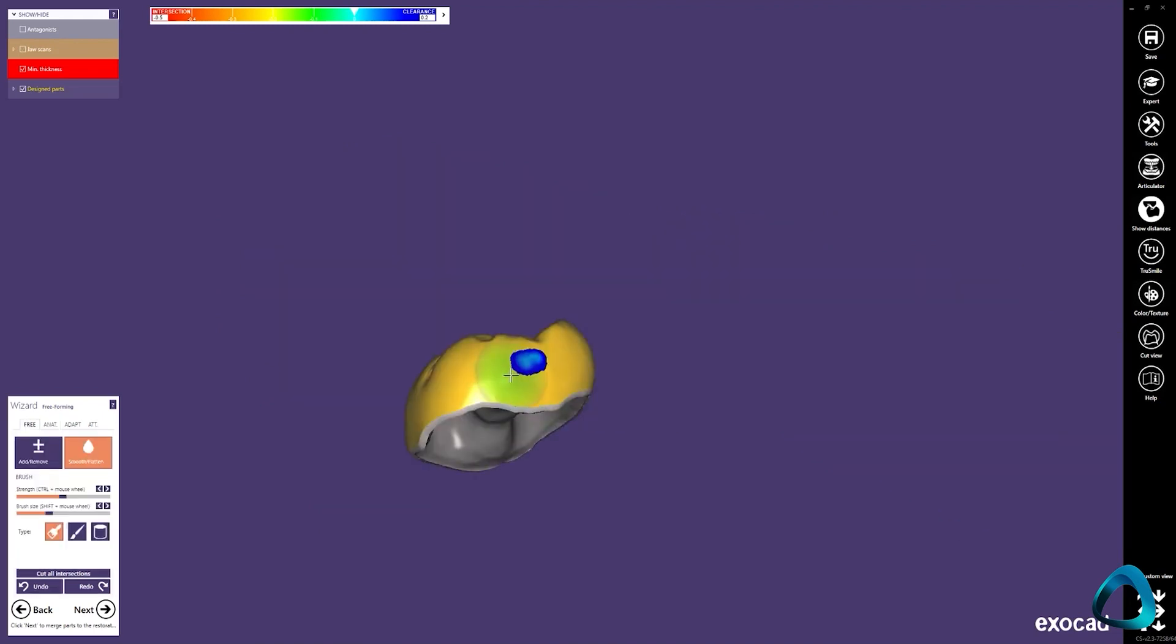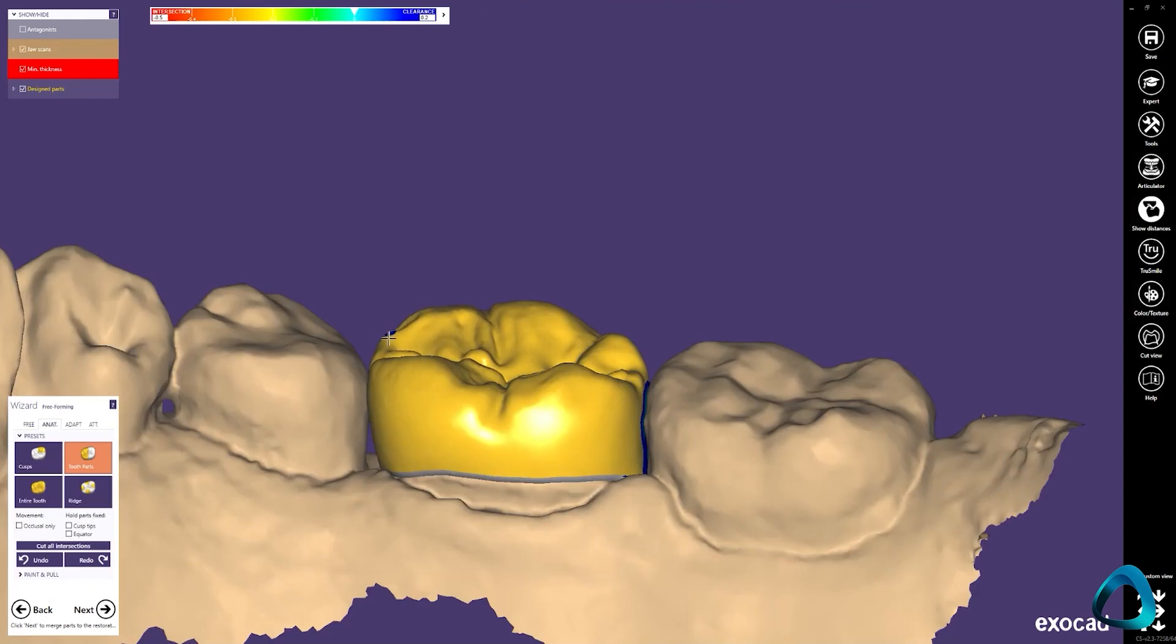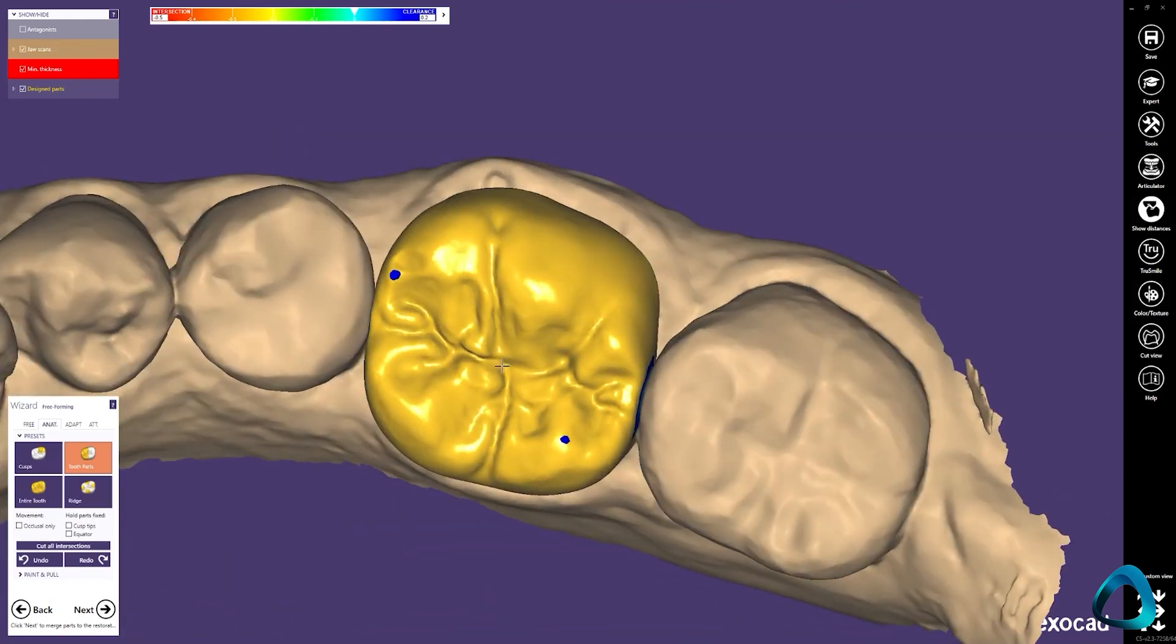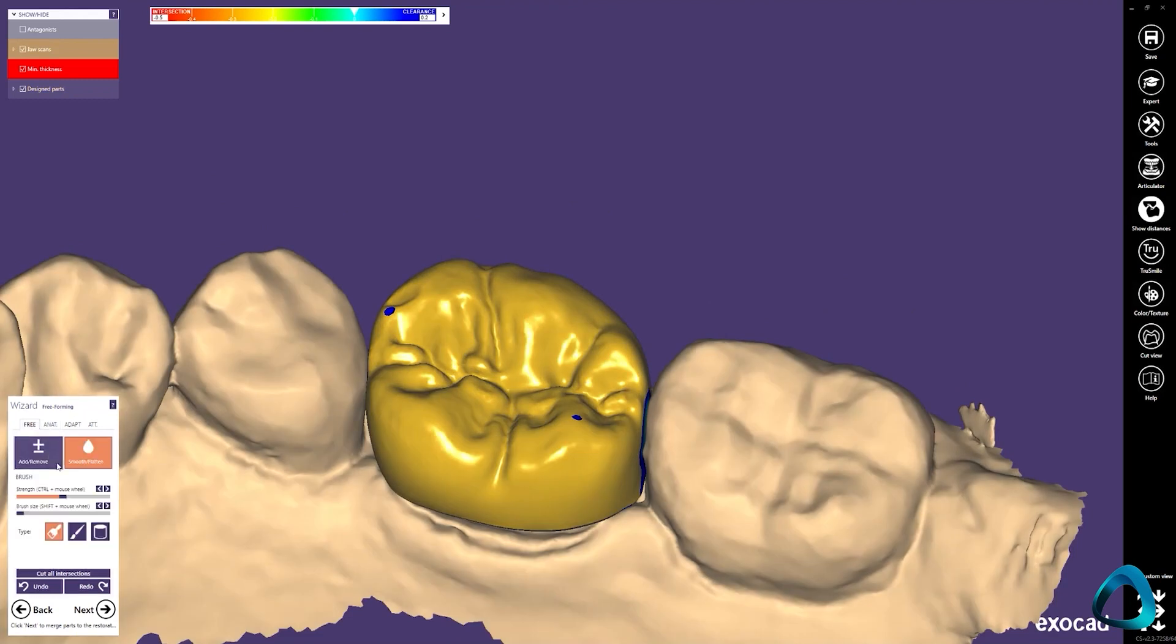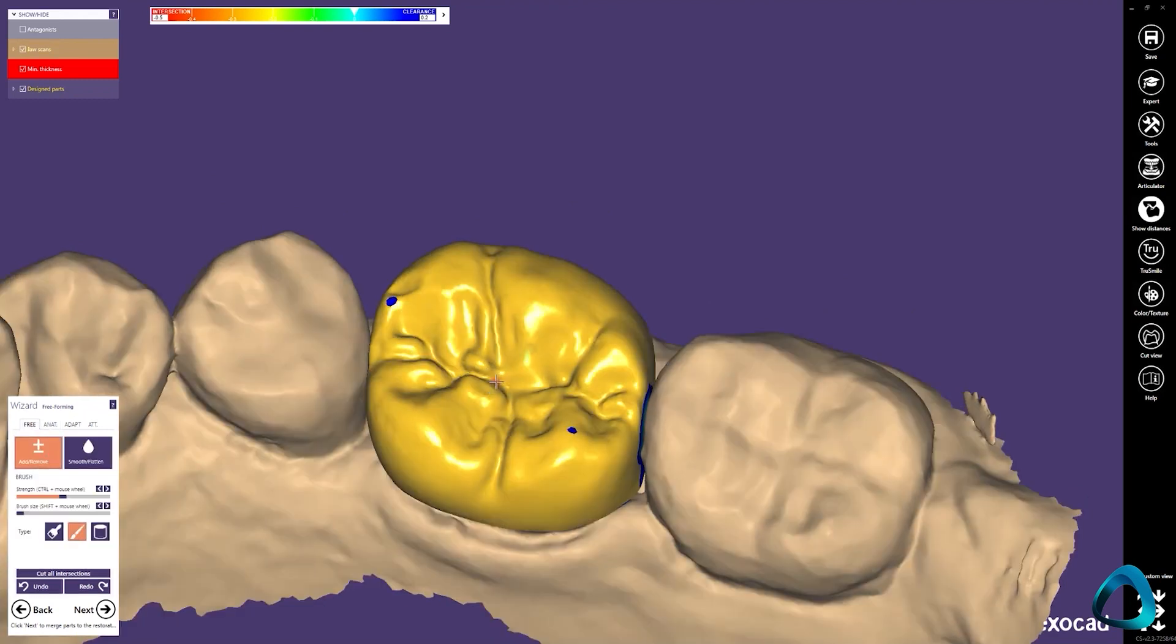Adjust the interproximal contacts. This is vital when designing restorations as you don't want a tight contact or even worse an open contact. You also need to make sure you check the occlusion and ensure the restoration fits seamlessly in the mouth so it doesn't require any high spots to be ground down.